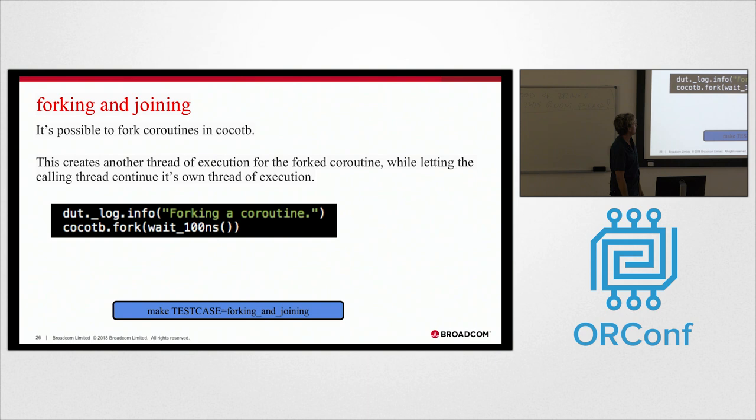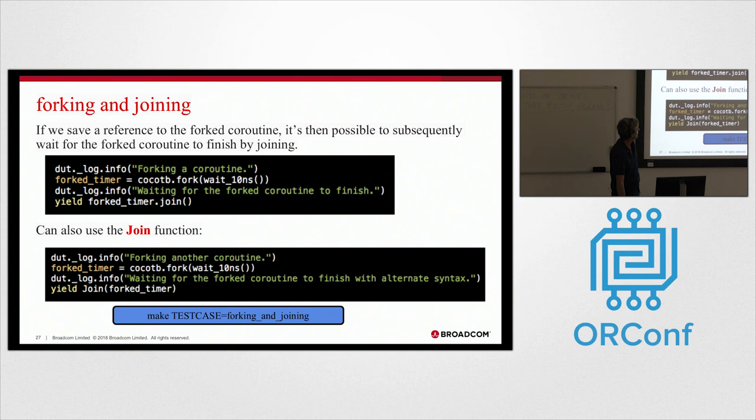So forking and joining - obviously another pretty important thing you want to be doing in test benches. When you fork, this will create another thread of execution inside Cocoa TB, and go along and execute that, but at the same time your own thread of execution will keep going. Once I've forked stuff off, you can save a reference to a forked coroutine here. Then you can yield on that guy finishing. This is a pretty trivial example, but it just shows you how that works. You can also use this join function.